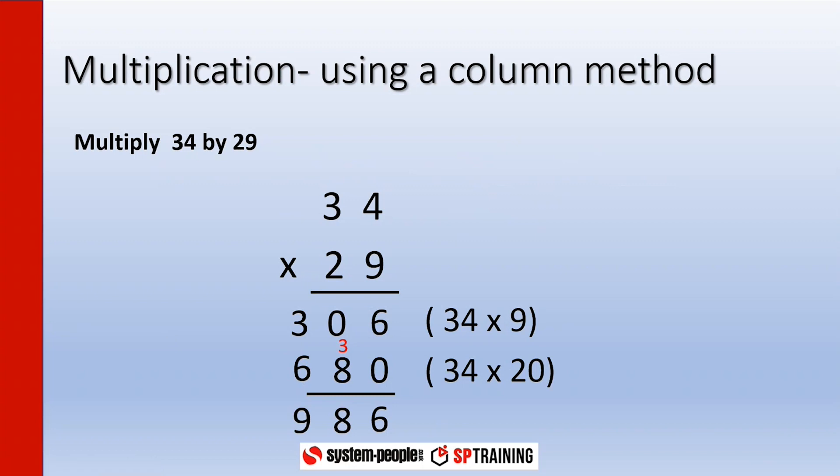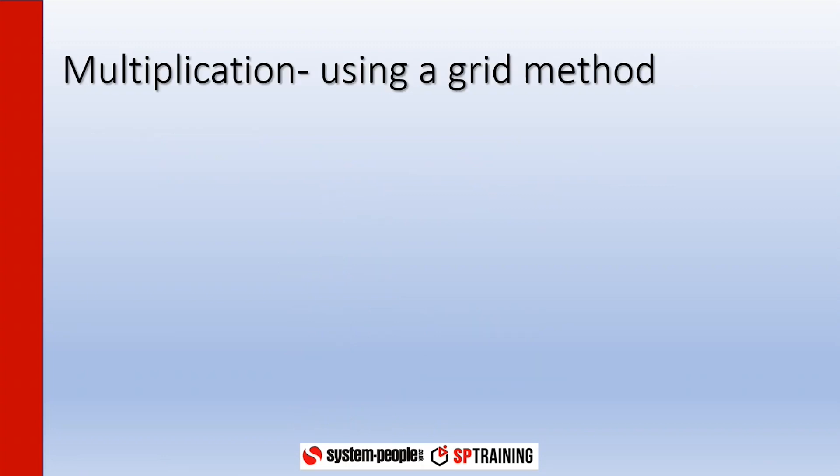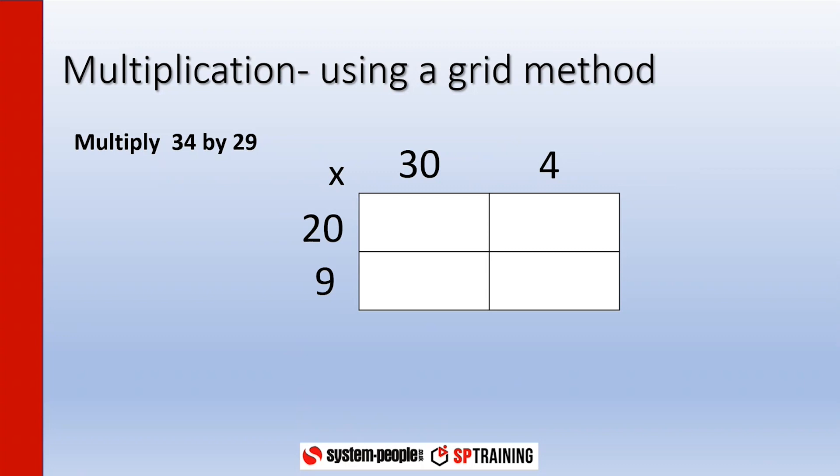But what about another method? We're going to use a grid method next. Some people find this useful as well. We're going to multiply the same numbers, so we're going to do exactly the same question, multiplying 34 by 29. And I start off with a multiplication grid and I'm going to split my 34 into 30 and 4, and the 29 into 20 and 9.